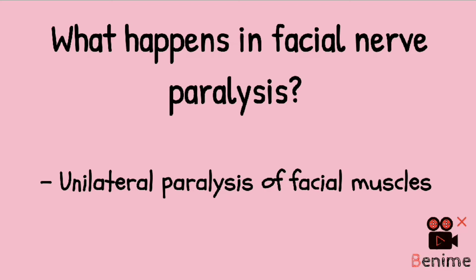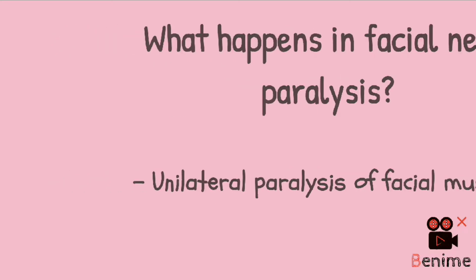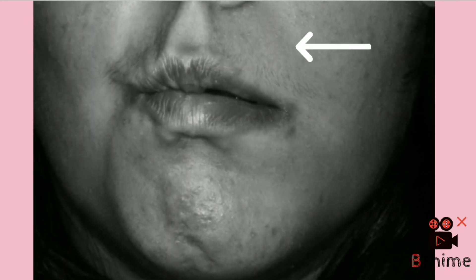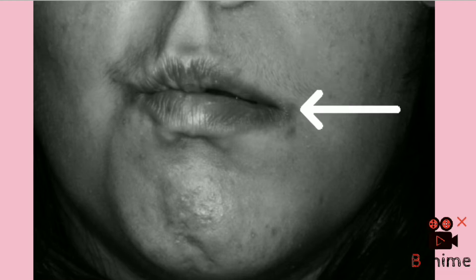First, let's see what happens in Facial Nerve Paralysis. In Facial Nerve Paralysis, the patient suffers unilateral paralysis of facial muscles of expression. In the patient, you will notice obliteration of the nasolabial fold and drooping of the corner of mouth.